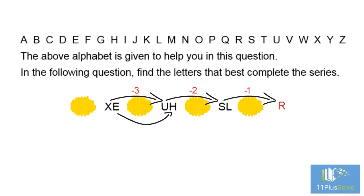The pattern for the second letters: from E to H is plus 3. From H to L is plus 4. We must move forwards five letters, which takes us to Q. So the missing letter pair is RQ.